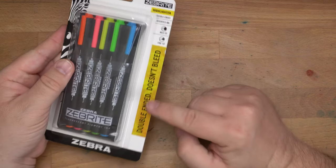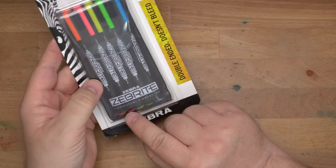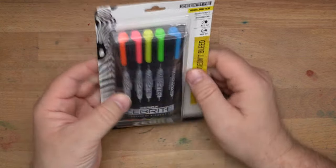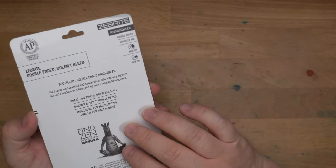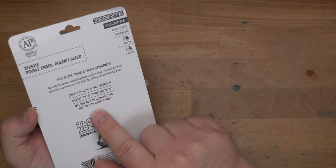I love a double-ended highlighter. We have a fine tip and a medium tip here and it says doesn't bleed. It says that these are, yeah, a fluorescent pigment ink, which I think will be pretty interesting. I do love a Zebra highlighter. I use a lot of highlighters. Great for Bibles and textbooks. Doesn't bleed through pages.